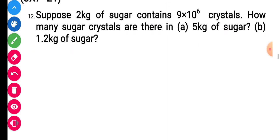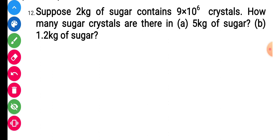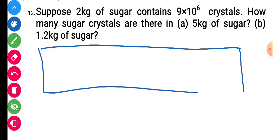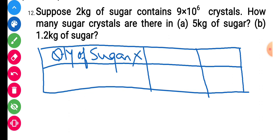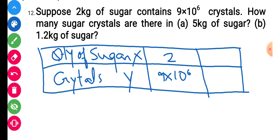Section C, Question 12: 2 kg of sugar contains 9 into 10⁶ crystals. How many crystals are in 5 kg of sugar and in 1.2 kg? Make a table with quantity of sugar as x and crystals as y. For 5 kg: using direct variation, x1/y1 equals x2/y2, so 2 upon 9×10⁶ equals 5 upon y. Solving gives y equals 22.5 into 10⁶, which in standard form is 2.25 into 10⁷.